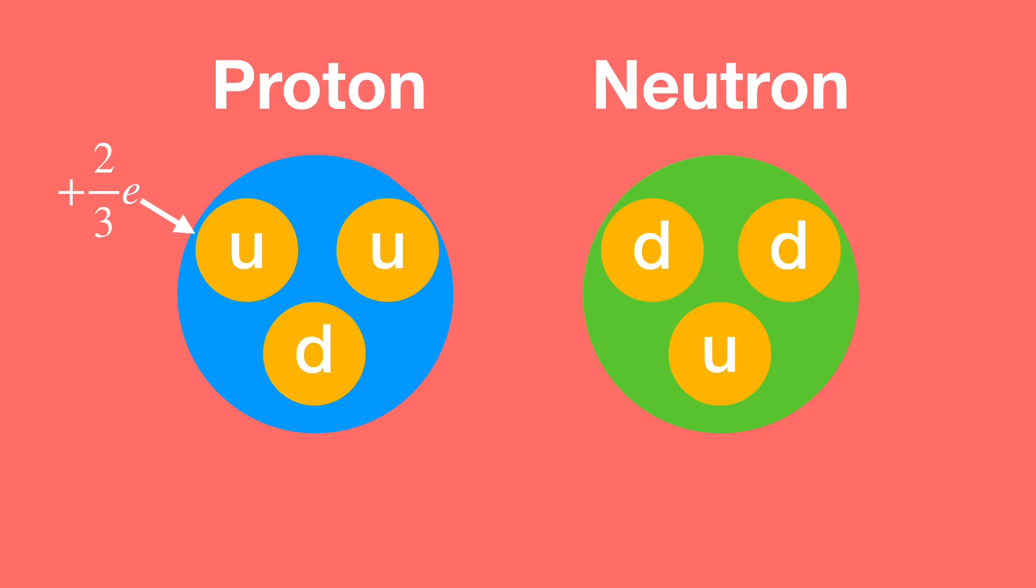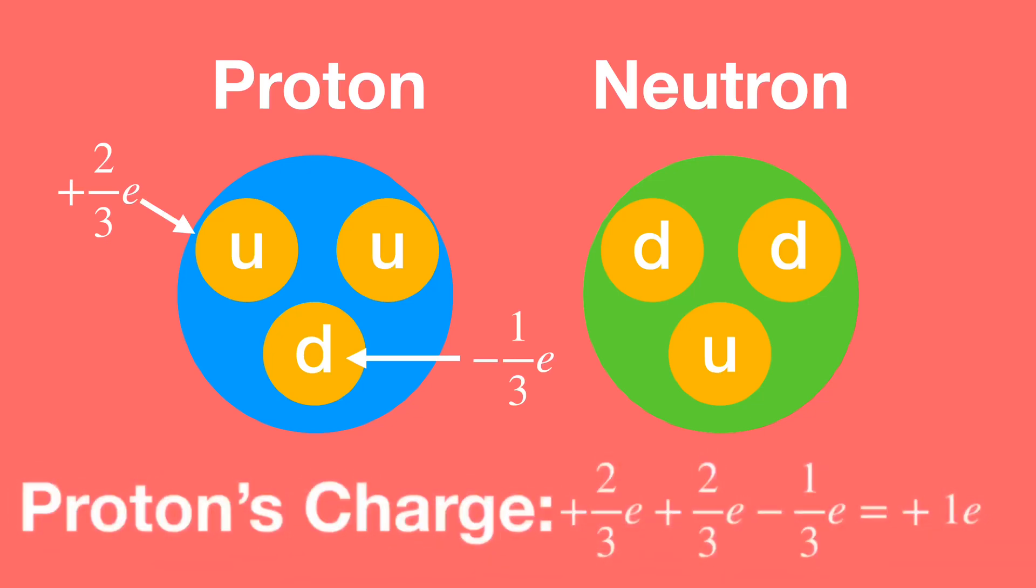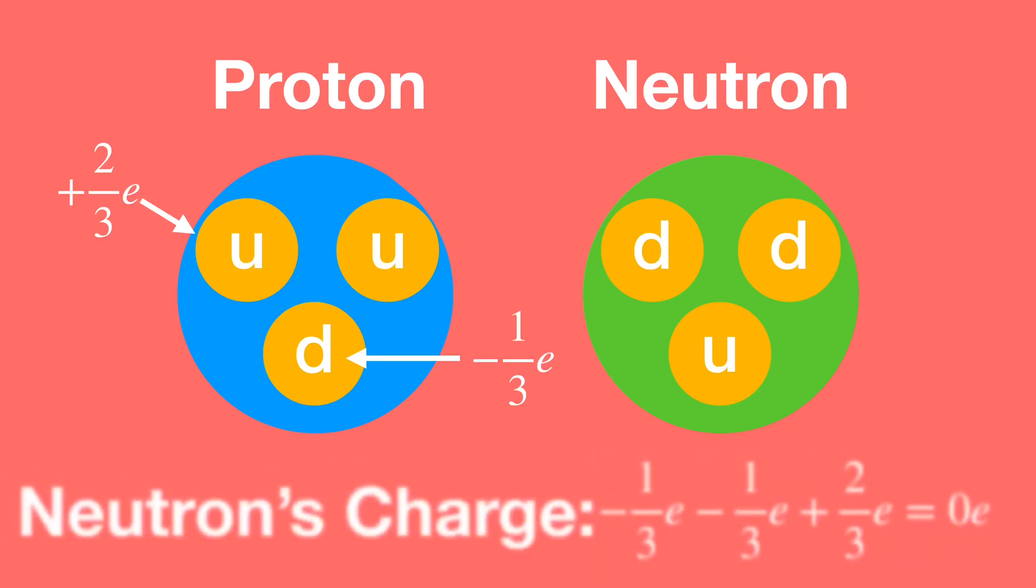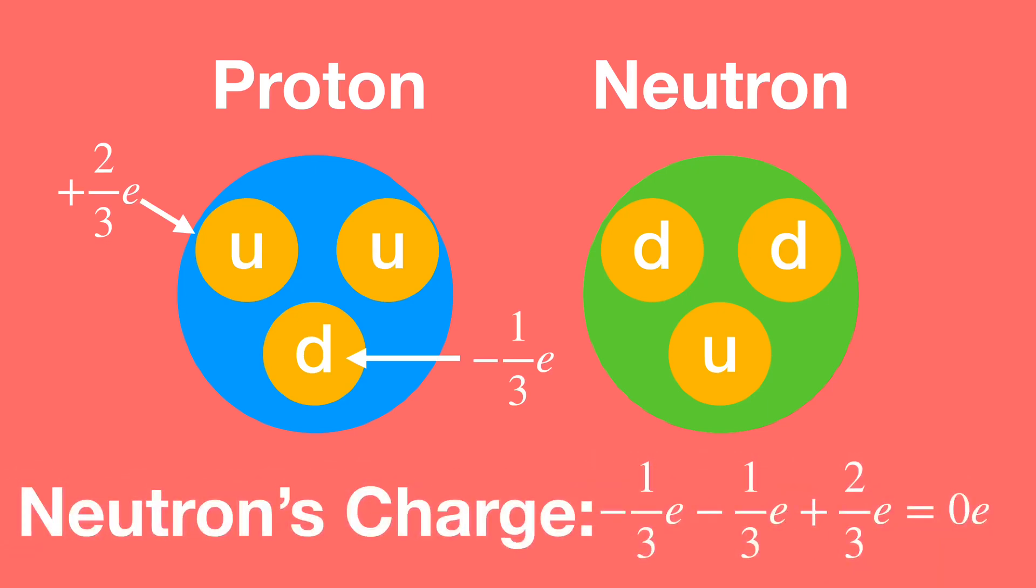Maybe what you found is that up quarks have a charge of plus two-thirds elementary charges, and down quarks have a charge of negative one-third elementary charges. Just as a sense check, if we plug those numbers in, two-thirds plus two-thirds minus one-third, yes, we get plus one elementary charge for the proton, and with the neutron we do minus one-third minus one-third plus two-thirds, which is zero. Perfect.